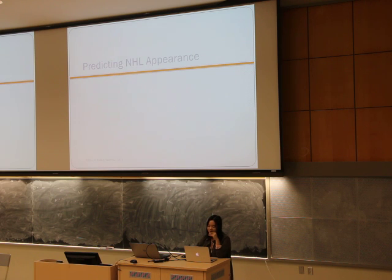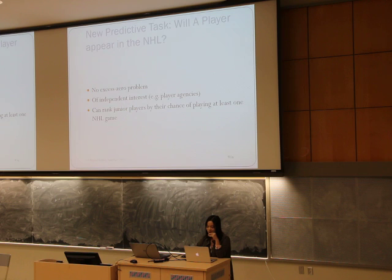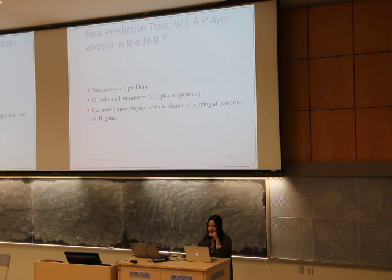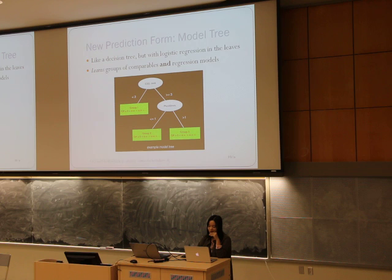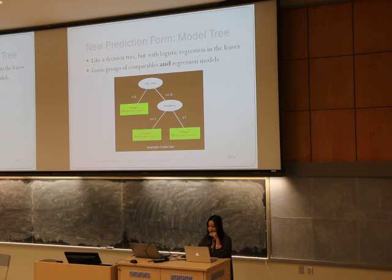Now we are going to talk about how we predict the NHL appearance for a drafted player. As mentioned before, there is an excess zeros issue in our dataset. However, it also means our dataset is balanced for classification, and the classification task itself is interesting. So we decided to predict whether a player can play at least one game in the NHL or not. We developed a logistic model tree in our experiment. The logistic regression model tree is similar to a decision tree, but each node contains a logistic regression model instead of a single value. Each leaf node contains a single logistic regression model.